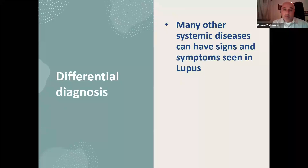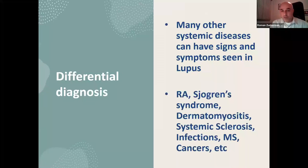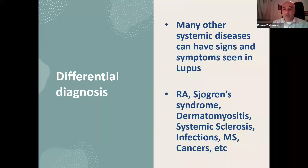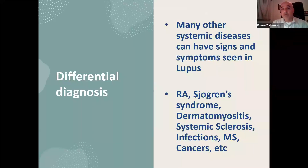Several conditions can present similarly to lupus. Rheumatological conditions that overlap include rheumatoid arthritis, Sjogren's syndrome, dermatomyositis, and systemic sclerosis. Non-rheumatological conditions like systemic infections, multiple sclerosis, and even cancers can all mimic systemic lupus.